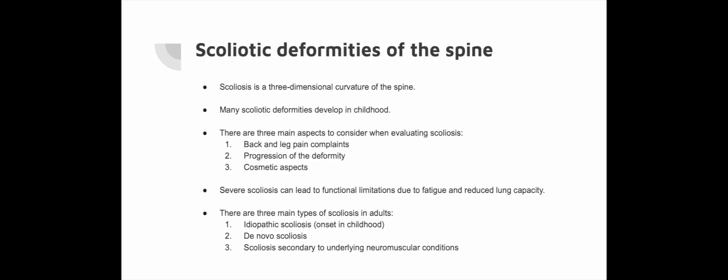Scoliosis is a curvature of the spine characterised by a three-dimensional abnormality, often depicted in two dimensions on X-ray. Many scoliotic deformities develop in childhood. There are three main aspects to consider when evaluating scoliosis: back pain and leg pain complaints, prognosis of the deformity, and the cosmetic aspect. Patients with severe scoliosis and stiffness often become functionally limited over the years due to fatigue and reduced lung capacity. Scoliotic abnormalities in adulthood are classified into three groups: idiopathic scoliosis with onset in childhood, de novo scoliosis, and scoliosis secondary to underlying neuromuscular pathology.